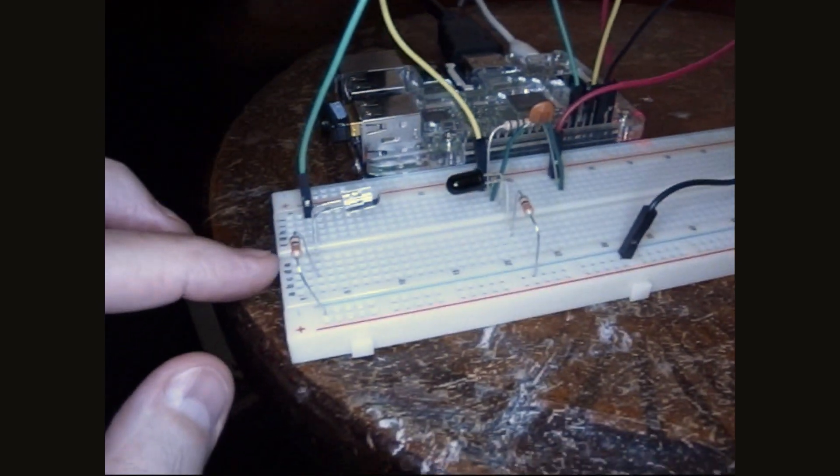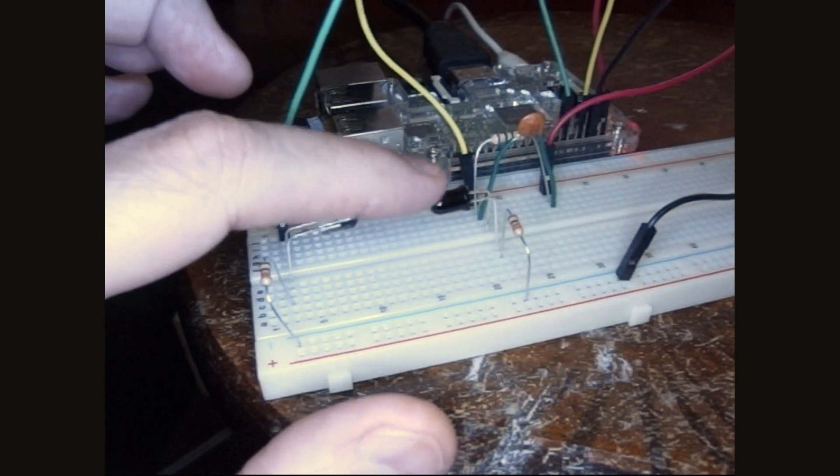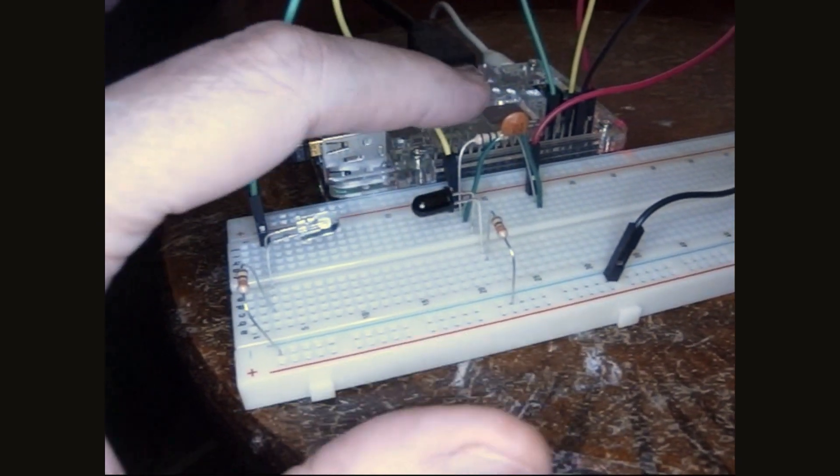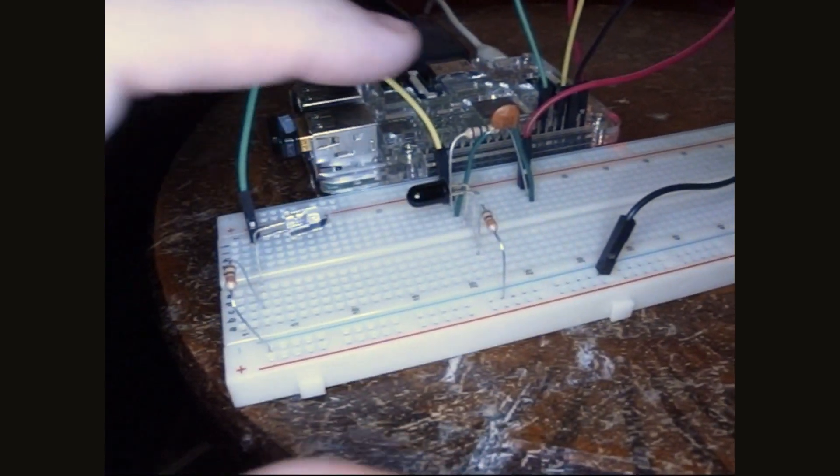The Pi is back here. I've got an infrared LED here that supplies light for this infrared photodiode. The photodiode is going to supply input to the Pi, and when the beam is broken between the two of these, the Pi will detect that.